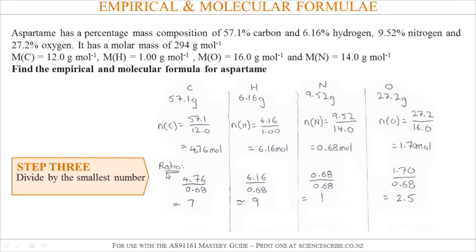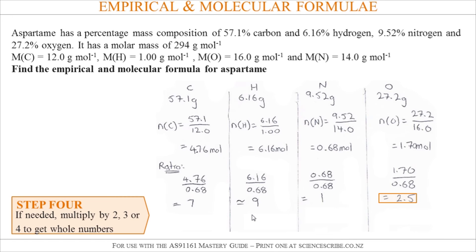Hit equals again and you'll see down here I've got 7, 9, 1, and 2.5. The 9 I've put a little squiggly line there. The squiggly equals sign just means that it's approximately 9. After that you'll notice that 2.5 is the odd number out in the sense that it's not a whole number.